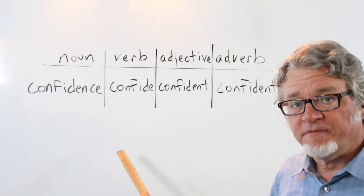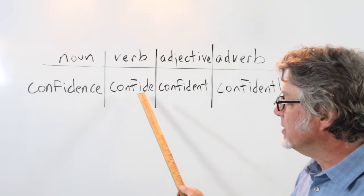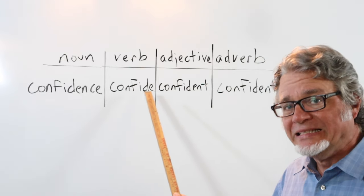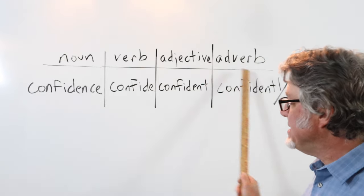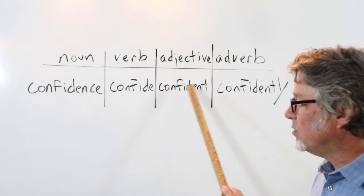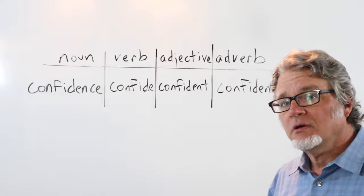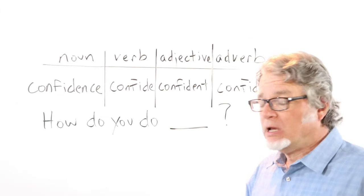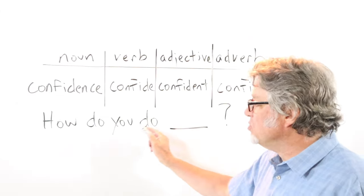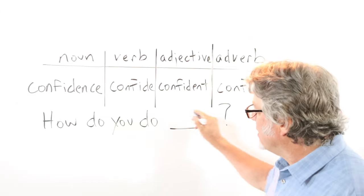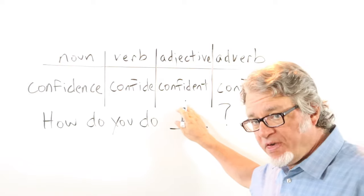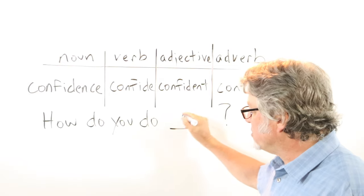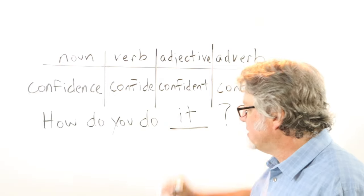The verb confide is used in ways that are a little bit different from the meanings of these other words. To answer the very simple question 'How do you do it?' — here the pronoun 'it' can represent the activity. How do you do it?